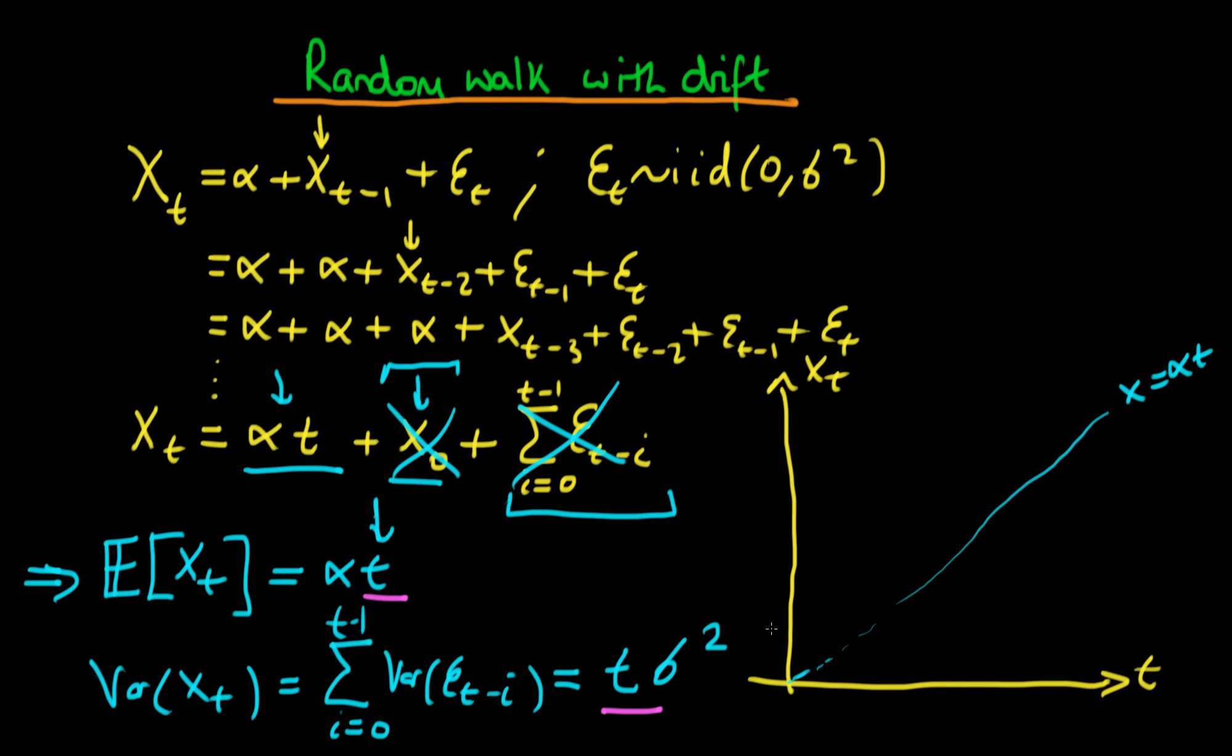but our process what it will look like is it would have some sort of runs of going above that and then it would go below that and then it might continue something like that so that would be a realization of a particular random walk with drift